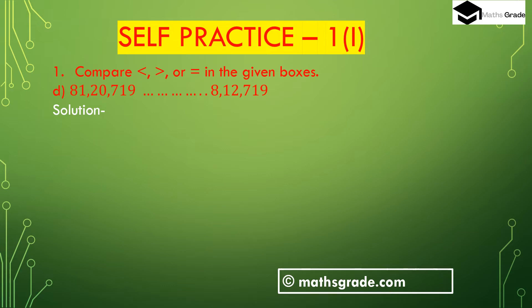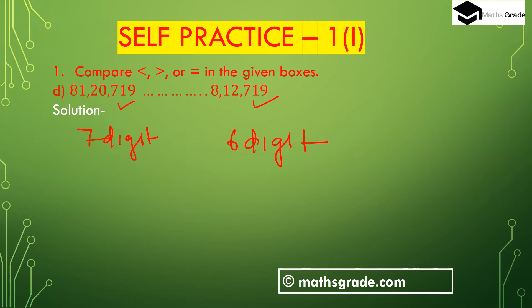Question 1(d): 81,20,719 and 8,12,719. Here 81,20,719 is a 7-digit number and 8,12,719 is a 6-digit number. A 7-digit number is always greater than a 6-digit number. So 81,20,719 is greater than 8,12,719.